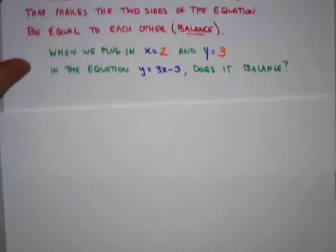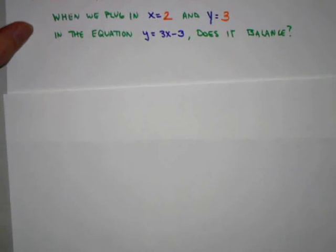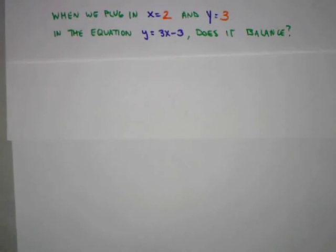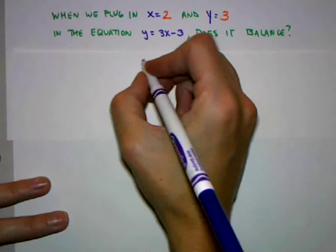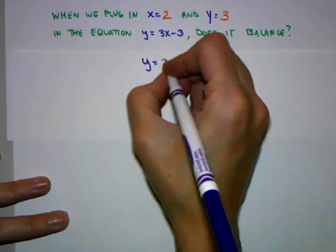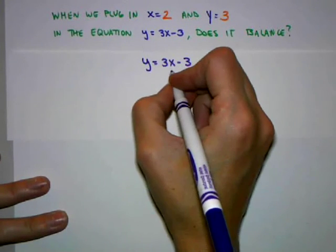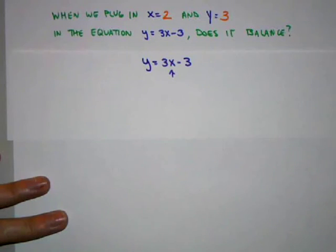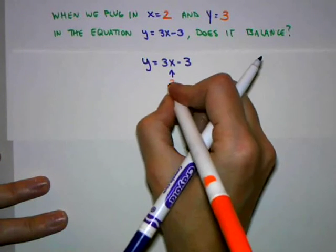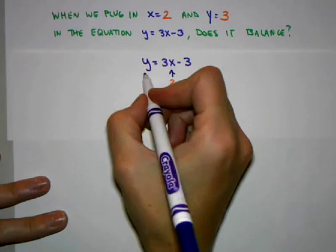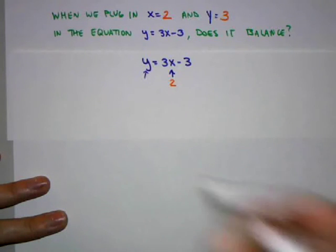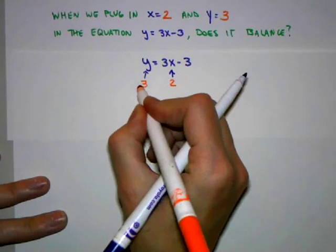Let's work through this and see how we would answer this question with these specific numbers. The first thing we need to do is rewrite our equation y = 3x - 3. In place of the x in this equation, we'll replace it with 2. And in place of the y, we'll replace it with 3.